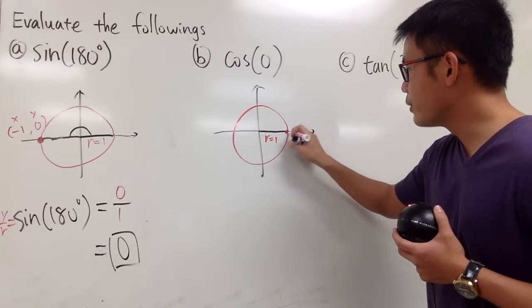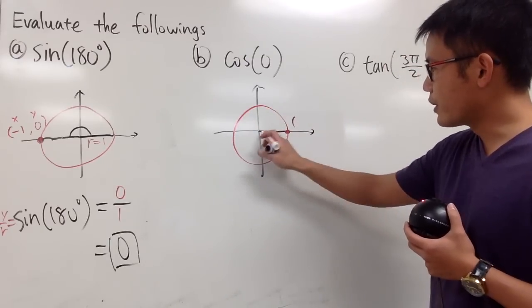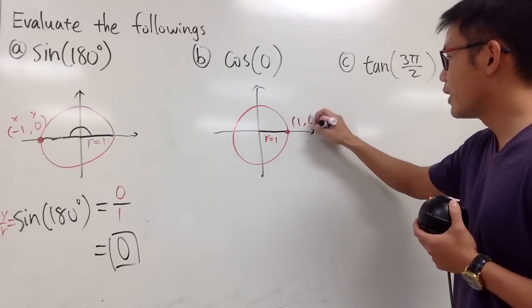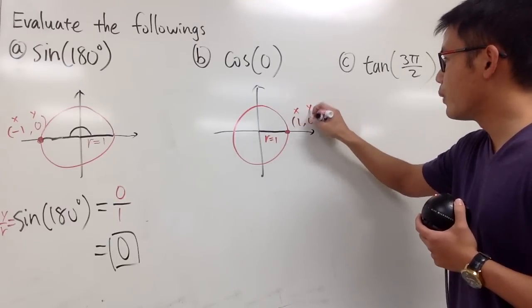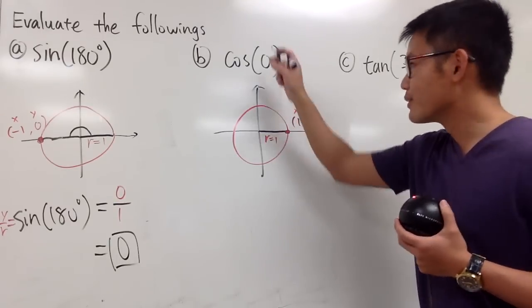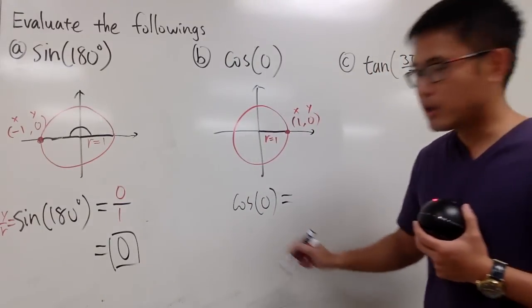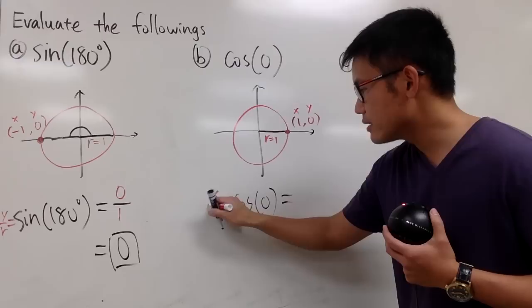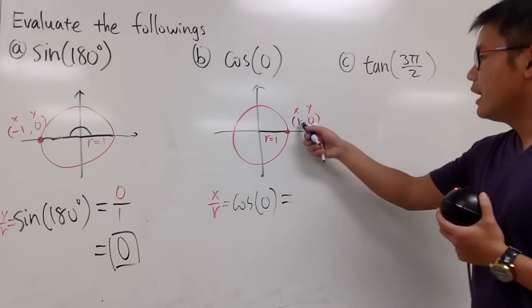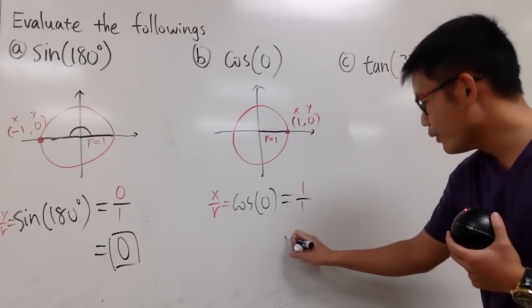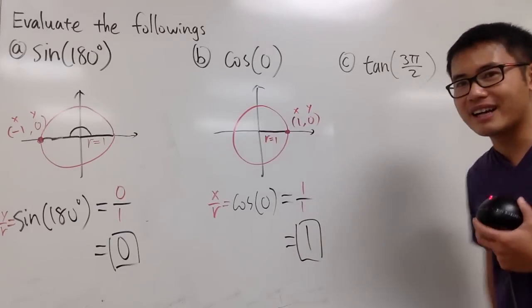And the focus is at this point now. So from here to here is 1, so that's the x value, and we don't go up, right? So the y value is 0, x is 1, y is 0. Now, cosine of 0. Well, remember, cosine is equal to x over r. x is equal to 1. r is equal to 1 as well. 1 over 1 is still 1, and we are done. Like that.